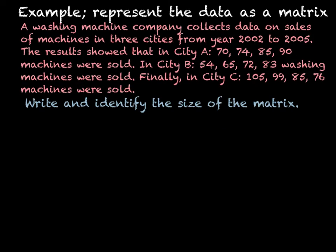In this next example we're going to come up with the matrix and identify the size. A washing machine company collects data on sales of washing machines in three cities from 2002 to 2005. The results showed that in city A: 70 machines were sold the first year, and then 74, 85, and 90. In city B: 54, 65, 72, and 83 washing machines were sold. And finally in city C: 105, 99, 85, and 76 machines were sold.